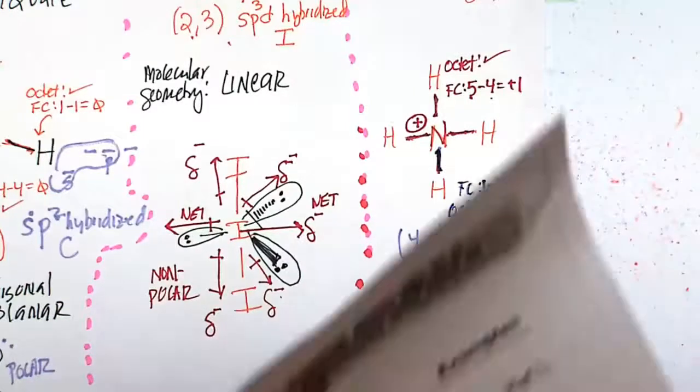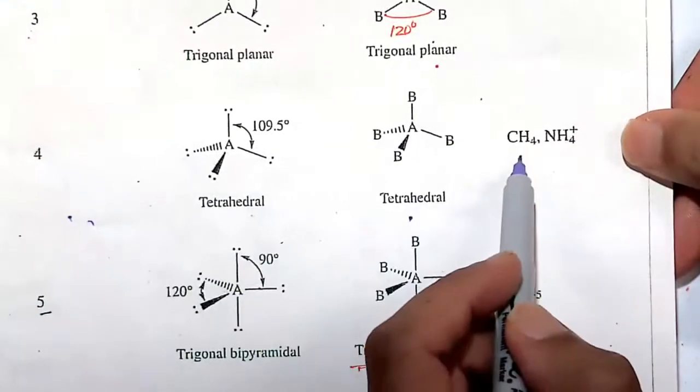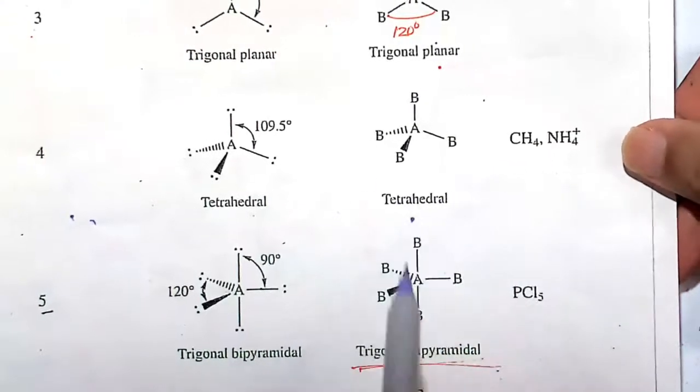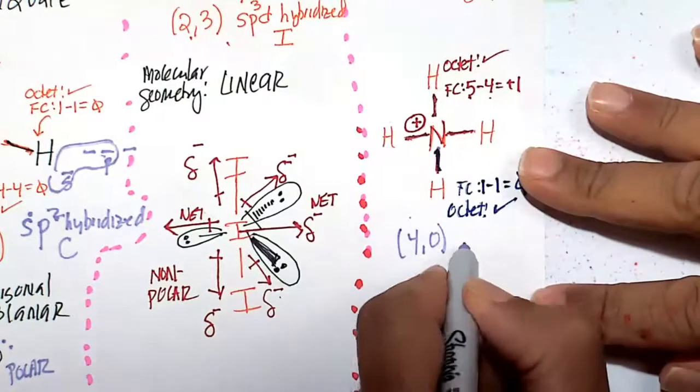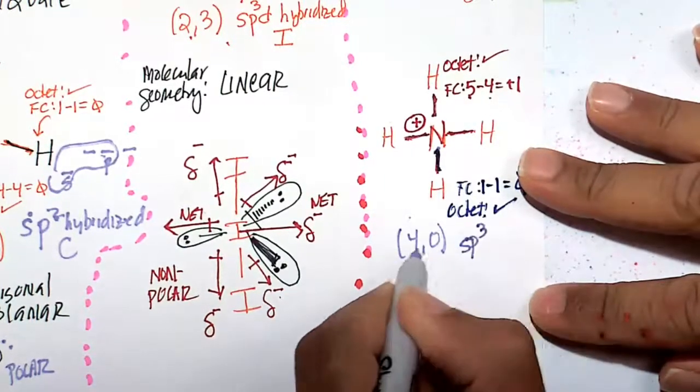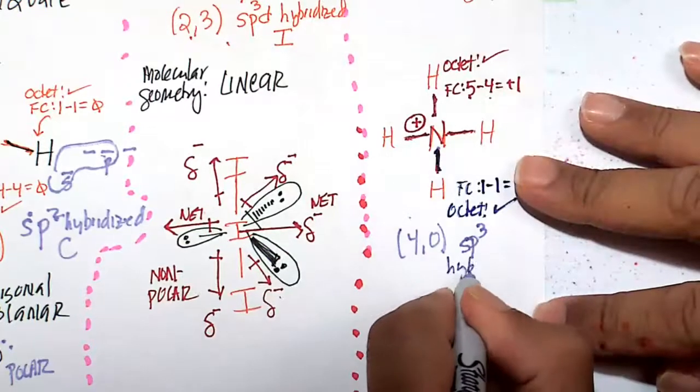Here we've got 4 bonds and no lone pairs. 4 bonds with no lone pairs is just like methane in the prior video, and that's going to be tetrahedral. So this will be an sp3 hybridized nitrogen. That's how we're able to get 4 bonds.